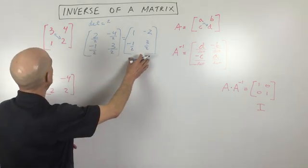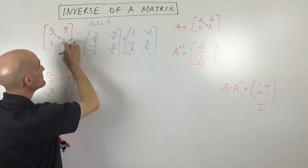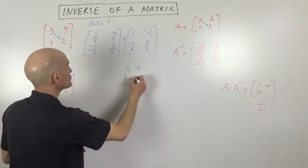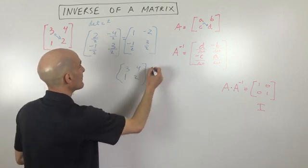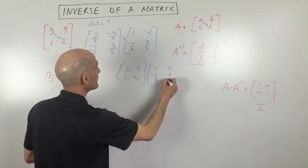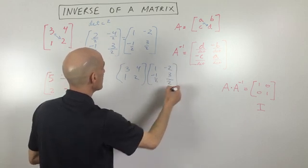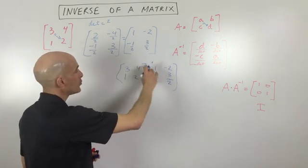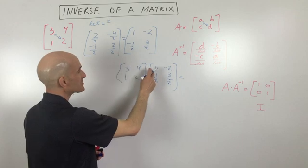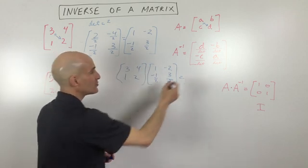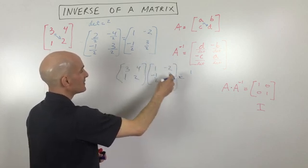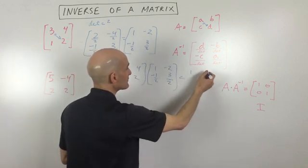Let's experiment with that. We'll take this matrix and its inverse: three, one, four, two — multiplied by its inverse: one, negative two, negative one half, and three halves. We take rows times columns. First row, first column gives us three minus two, which is one. First row, second column gives us negative six plus six, which is zero.